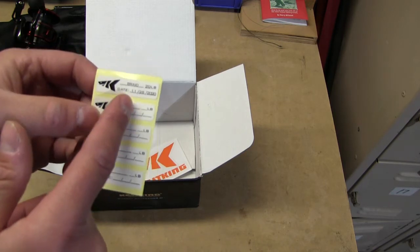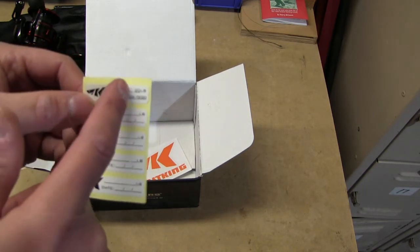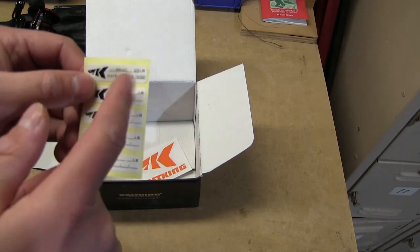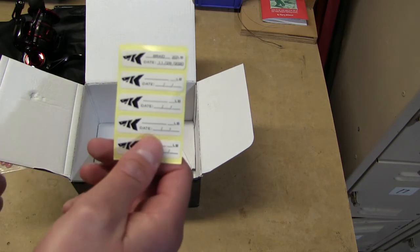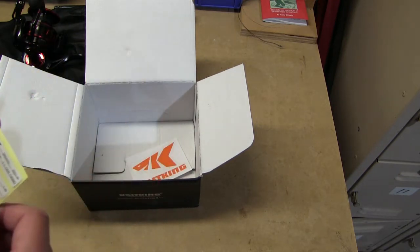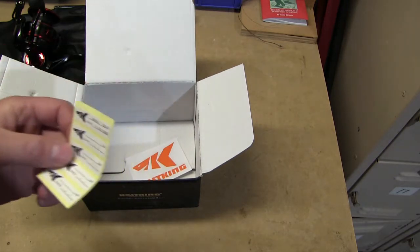And that's kind of interesting—you get some stickers you can put on there. They got an example where you put the type of line you got on, the pound, and then of course you can date it so you know how old your line is and when you might need to change it out. So that's kind of a neat thing. I've never seen that before in a box like that.